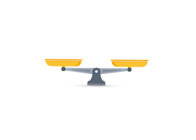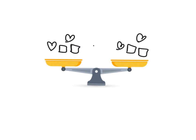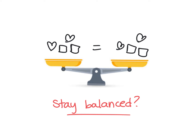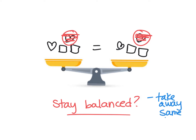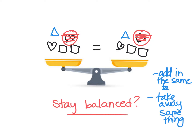I just want to pause and talk about a couple of things with balances. If I have some hearts and squares on both sides and it's balanced, what could you do to both sides to keep it balanced? If you take away the exact same thing from both sides, it stays balanced — that's what I've been doing in these problems. You can also add in the same thing to both sides and it stays balanced. Whatever you do to one side, do to the other.